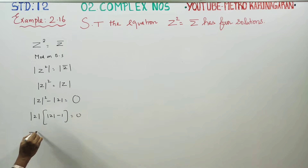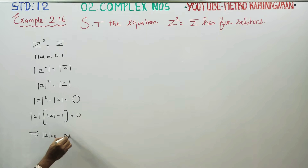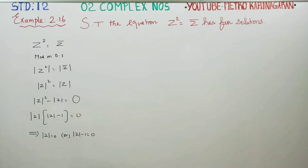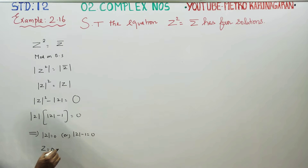In the sum, we have two cases. Modulus of Z equal to 0, or modulus of Z minus 1 equal to 0. From modulus of Z equal to 0, Z is equal to 0, which gives one solution.